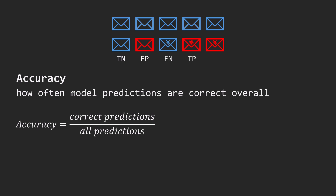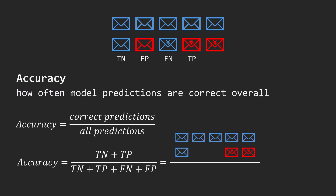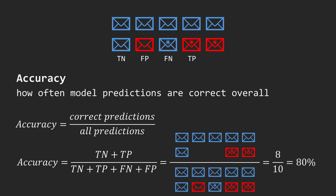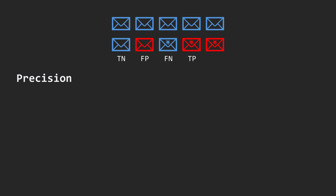Correct predictions are those labeled true, i.e. the true negatives and true positives. In this example, accuracy is 8 correct out of 10 emails, so 80%. Next is precision.